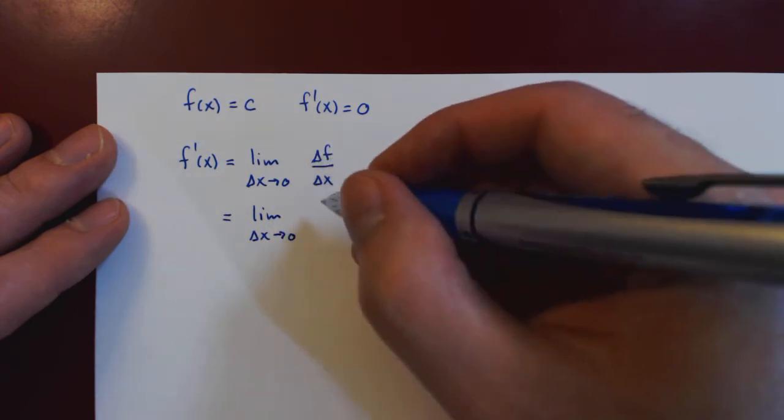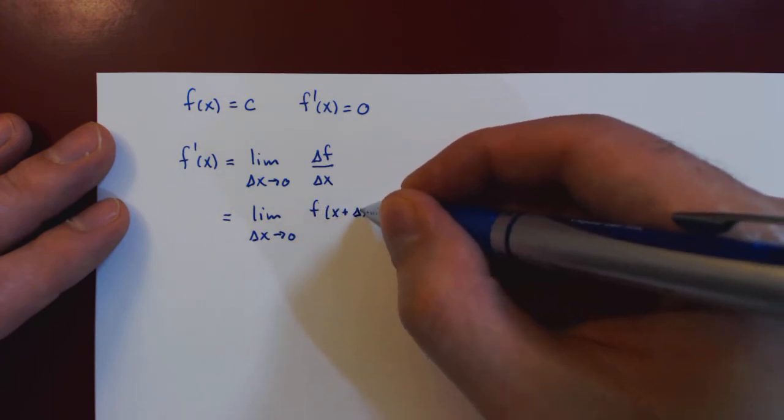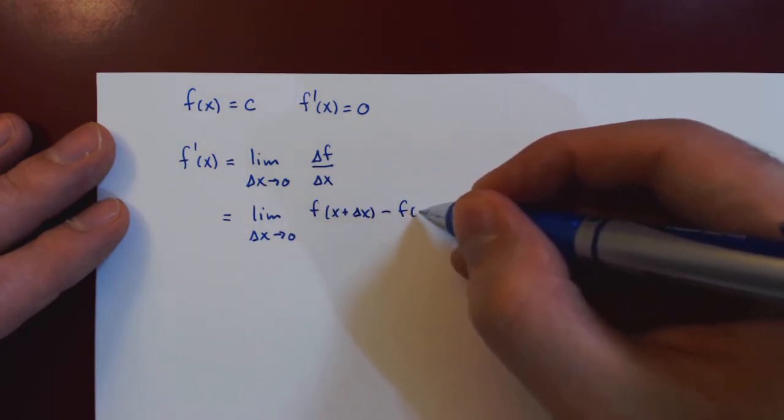Let me now write the change in f explicitly, so this is f of x plus delta x minus f of x.